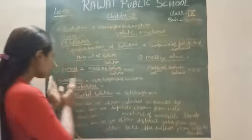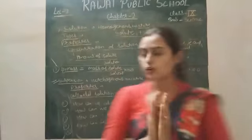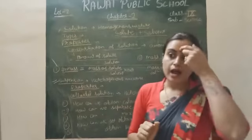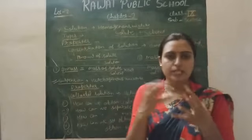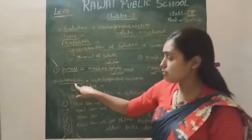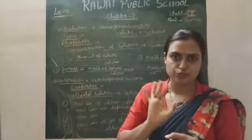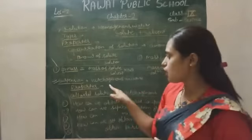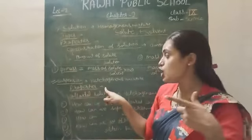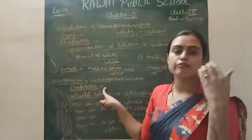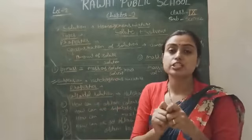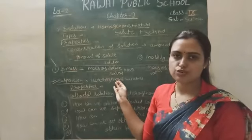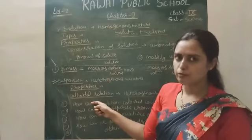A suspension is also a mixture, but it is a heterogeneous mixture where the components do not mix with each other properly — they are only suspended. Because the particles in a suspension are not completely mixed, they can be separated by filtration. The particle size in a suspension is large, so a beam of light can pass easily through these particles. Suspension is always heterogeneous.